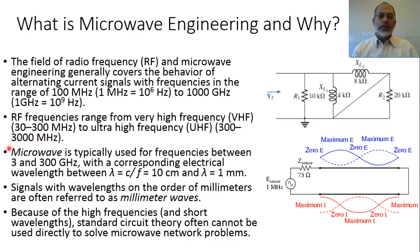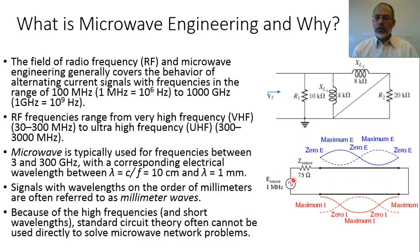Why do microwave signals represent a separate part of engineering? Because at high frequency, the wavelength is short, so standard circuit analysis cannot be used directly in microwave networks. If we assume a very simple circuit — a source, a resistance, and a simple wire — this simple wire has a length comparable to the wavelength. In this case, the voltage and current on this wire are not constant at every point; they vary according to the wavelength.